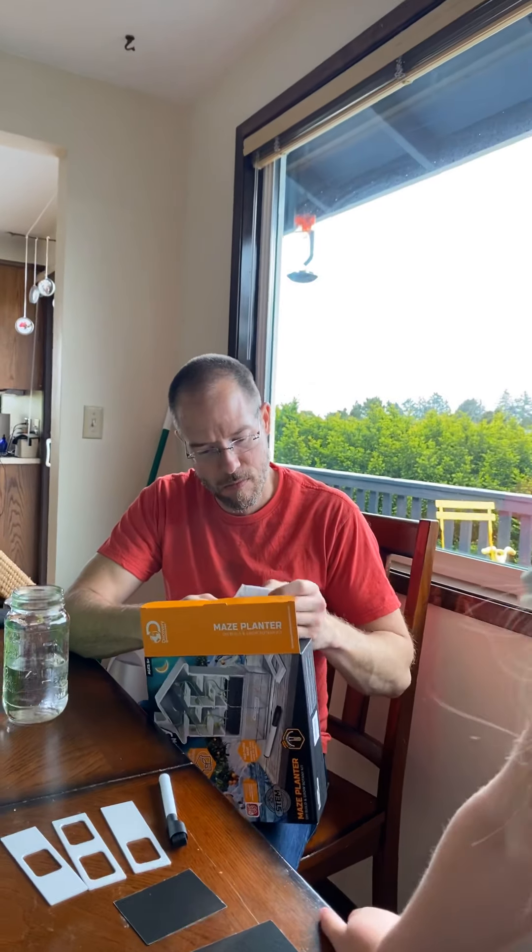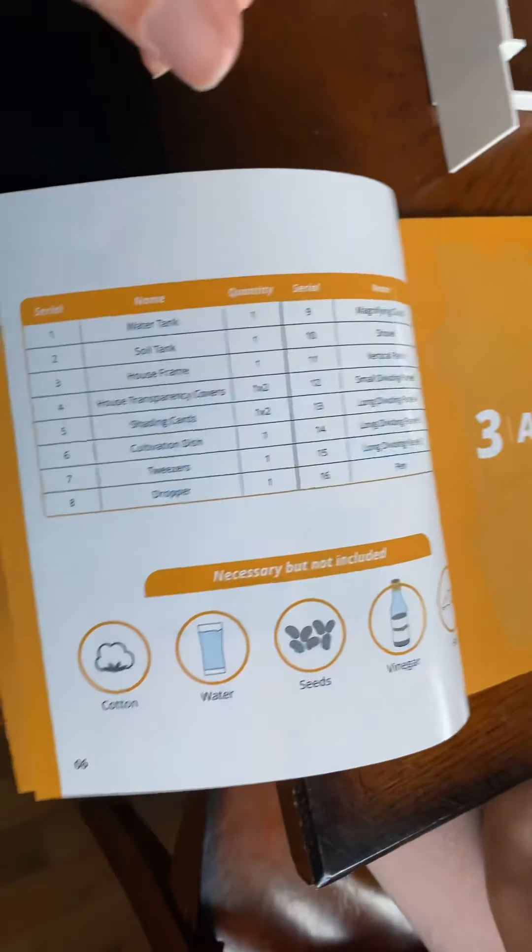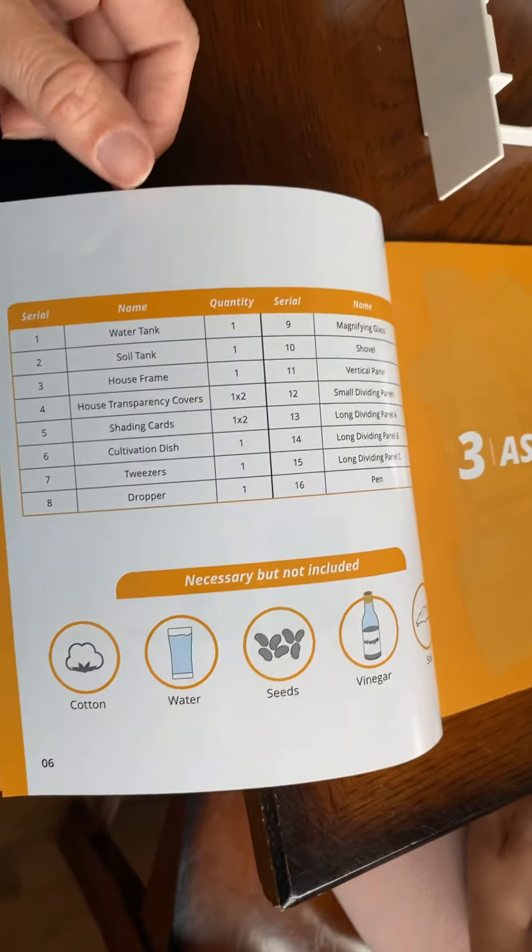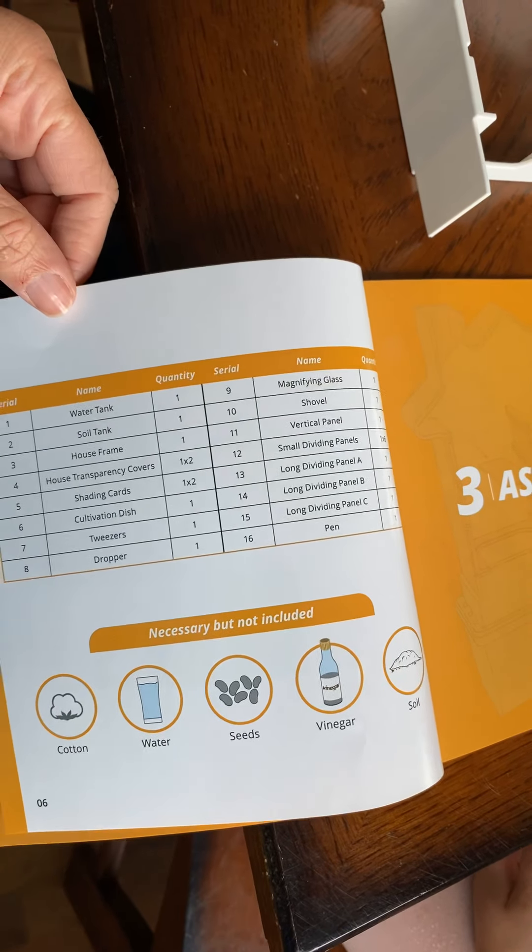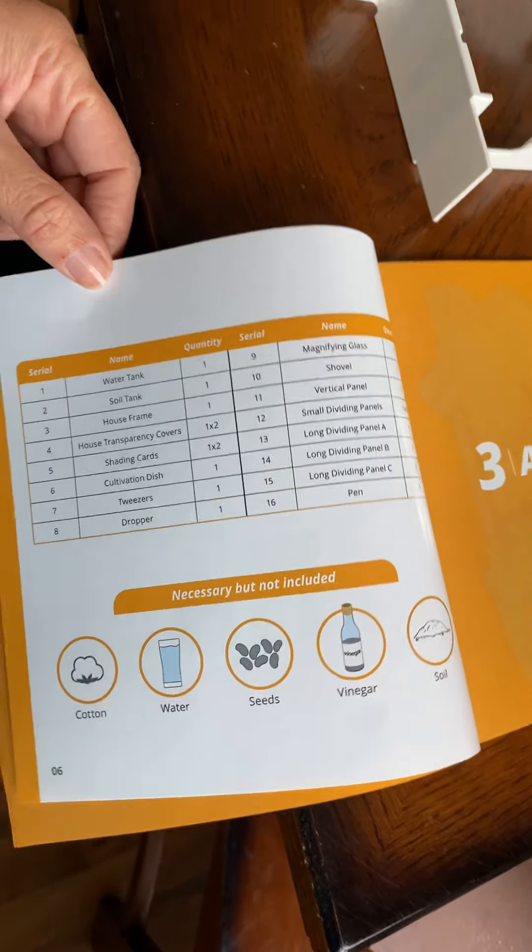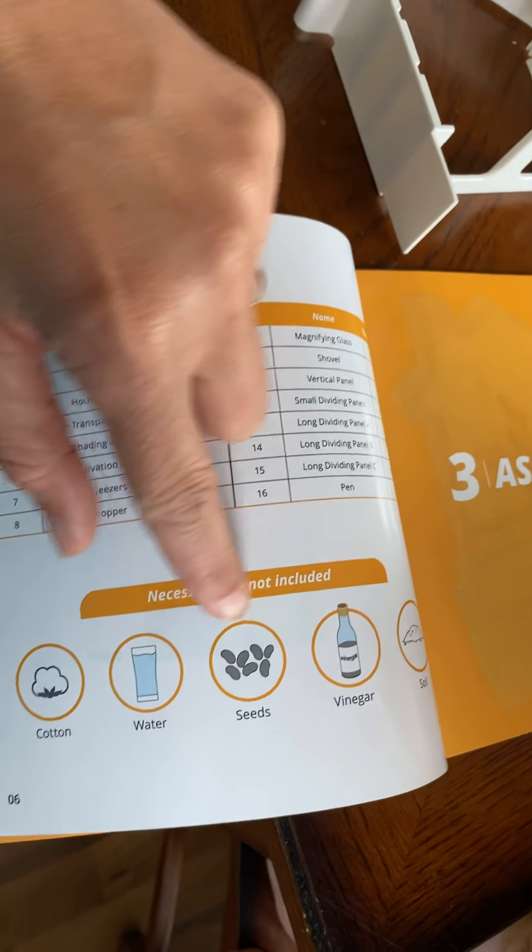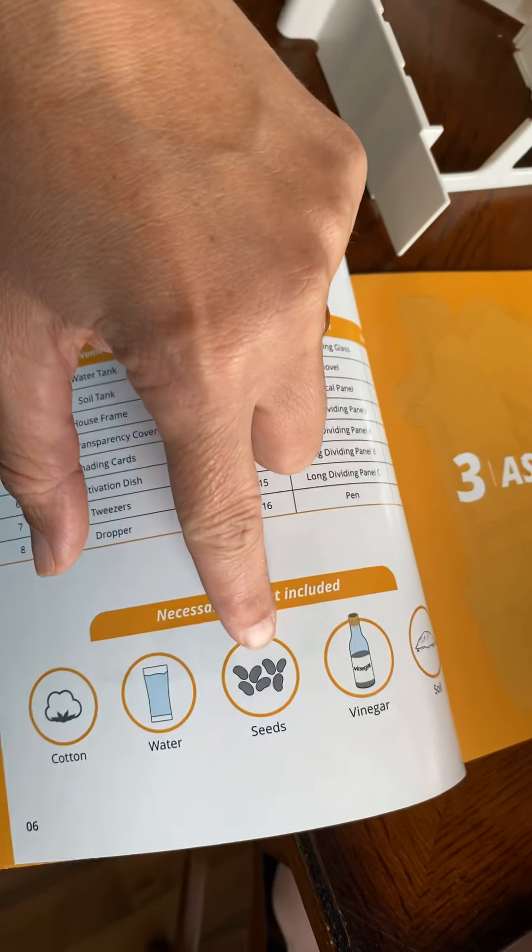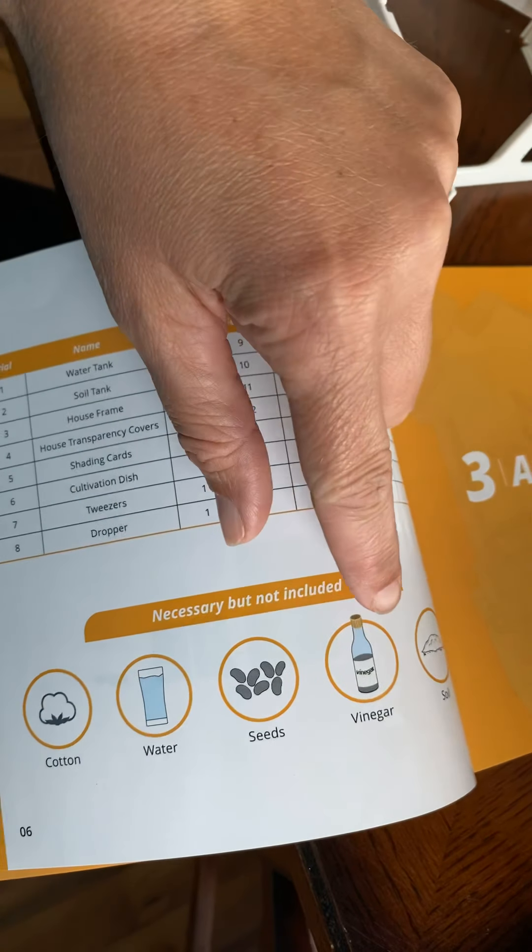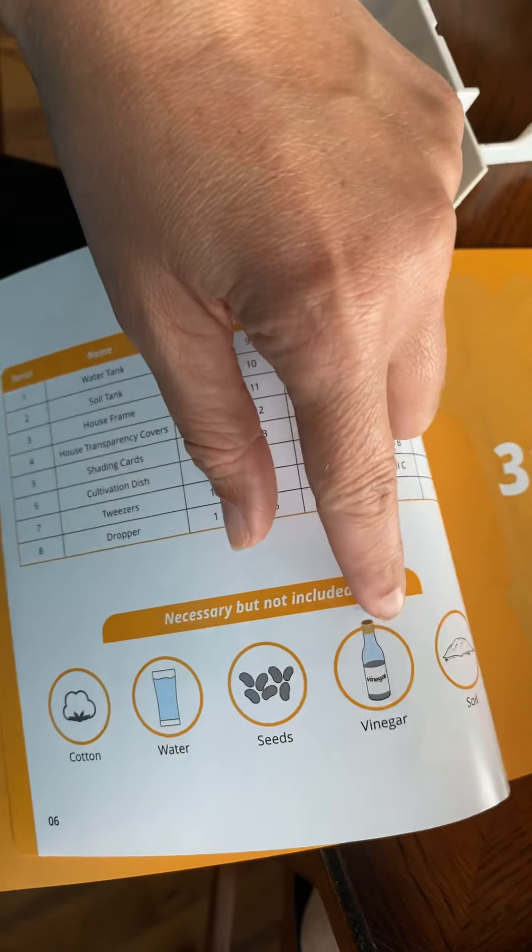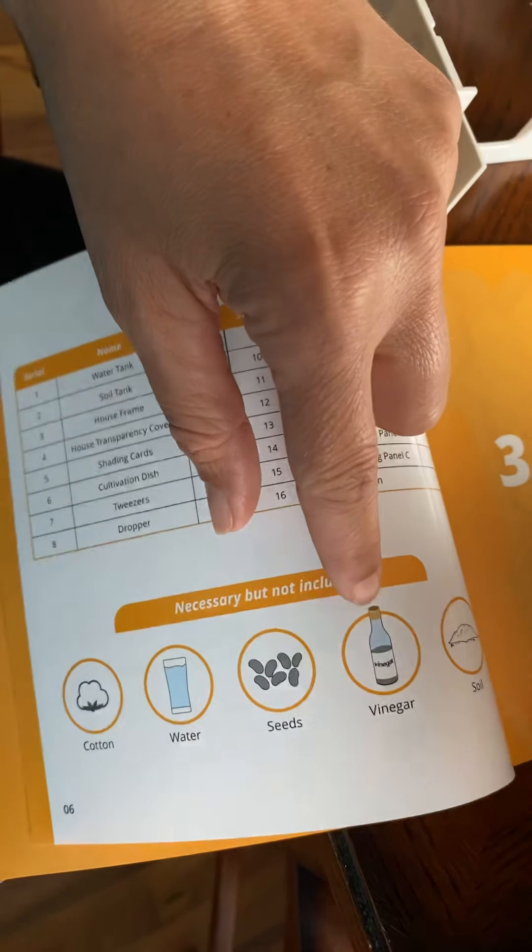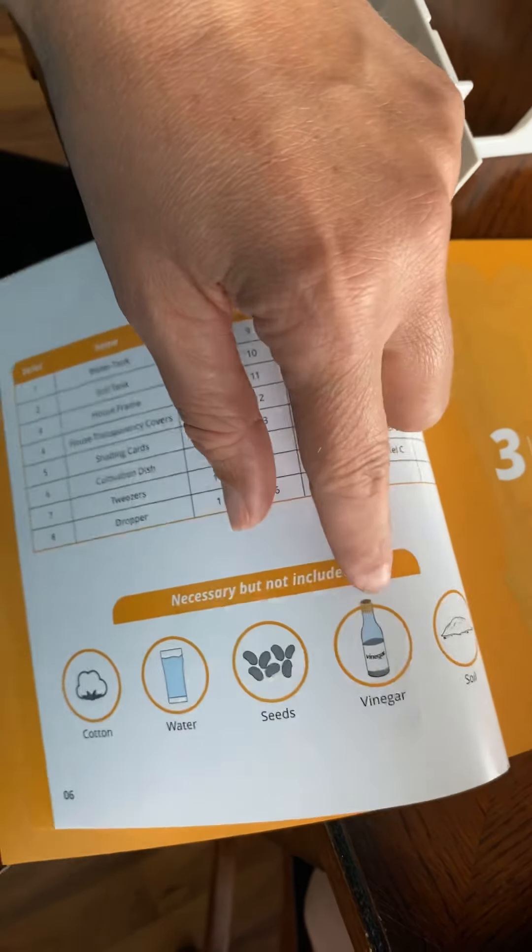So the book now says we're doing assembly. It says necessary but not included: we need a cotton ball, water, seeds - I do have some seeds - vinegar, and soil. That little packet that was in there was to keep it fresh.